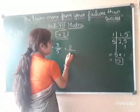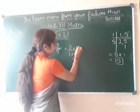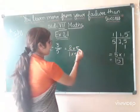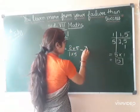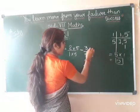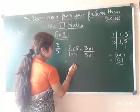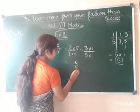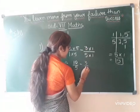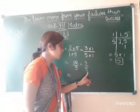For example, 2 upon 1, multiply by 5. The number which you take in the denominator, the same number you will multiply in the numerator. Minus 3 upon 5 — here 5 is already there, so multiply by 1. 2 fives are 10 upon 5, minus 3 ones are 3 upon 5. Now you can see both denominators are the same.